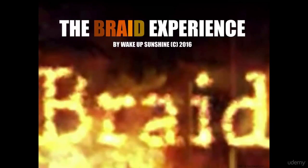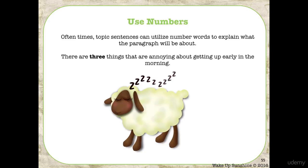Welcome back to the Braid Experience portion of your 'How to Write a Topic Sentence' lecture. You are moving on to your fourth style now. As we finish out this course, we are moving on to the 'use numbers' style or form of a topic sentence. The only thing I want to remind you of is: if you begin your topic sentence with a number — whether the number is one or one thousand — if the number starts your sentence, you have to spell it out.